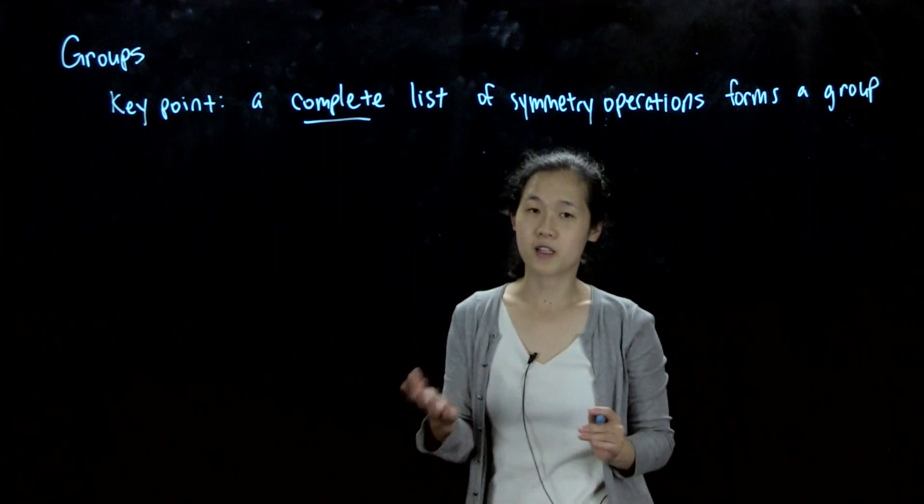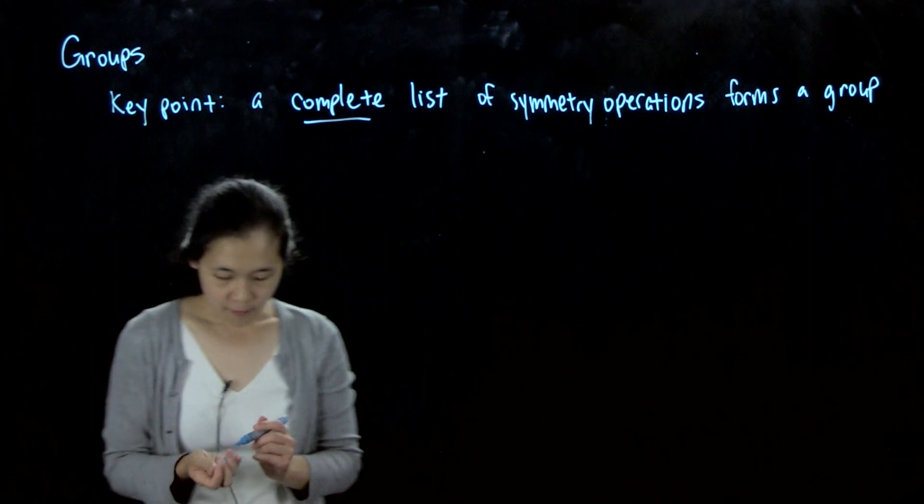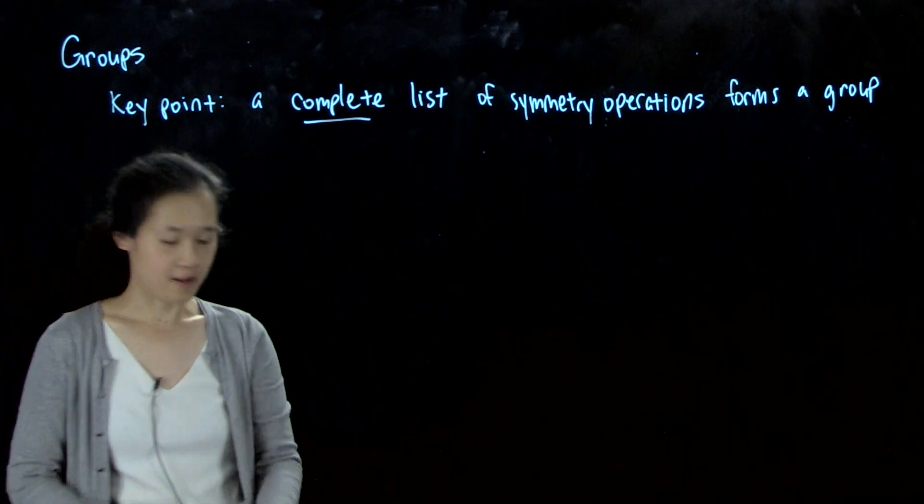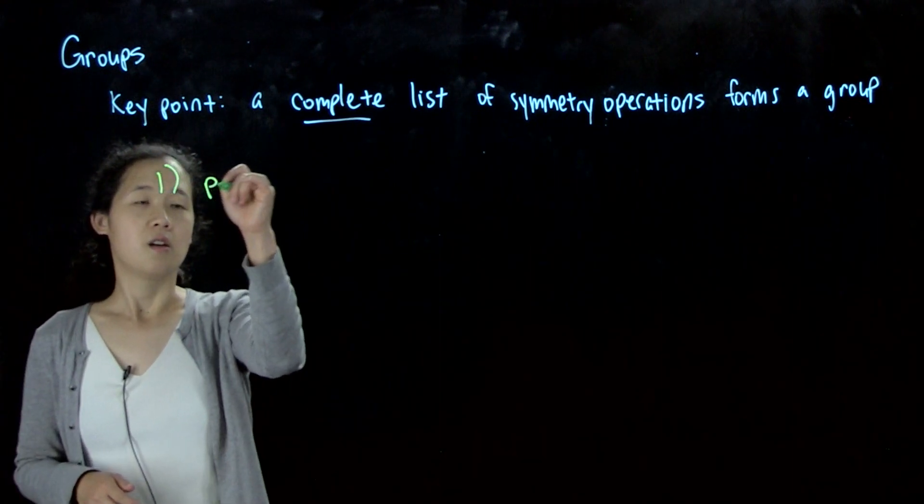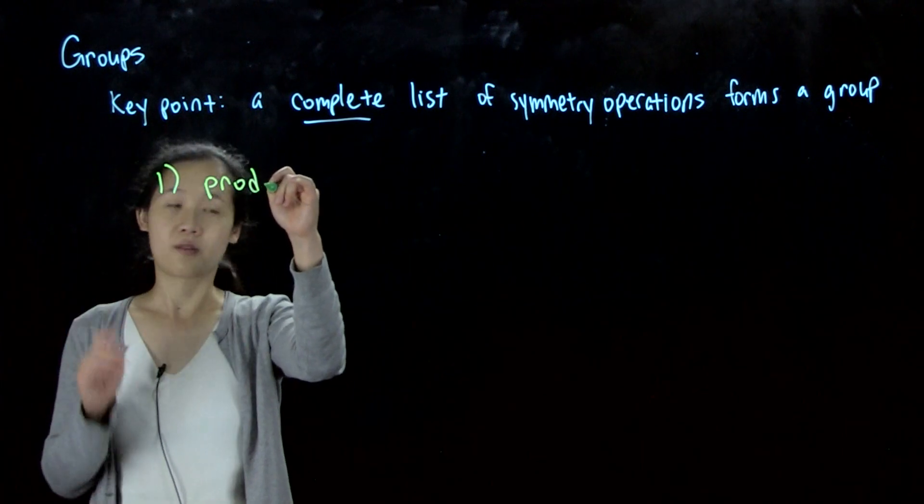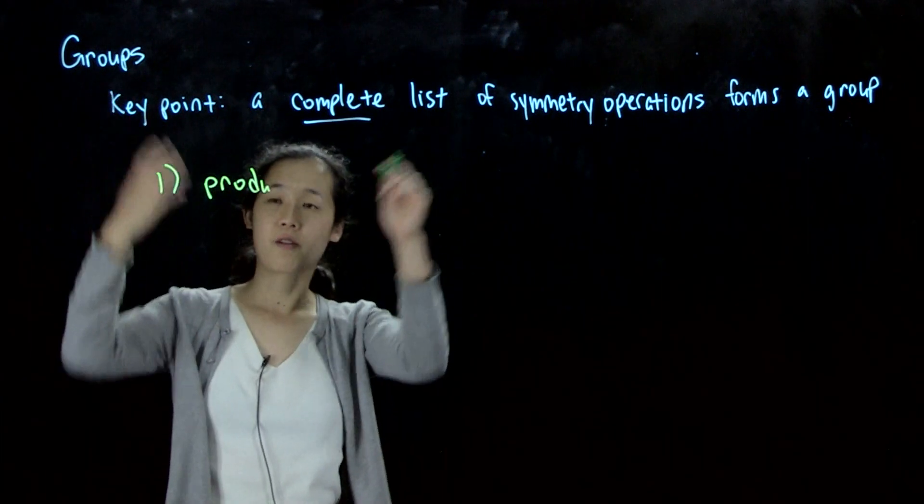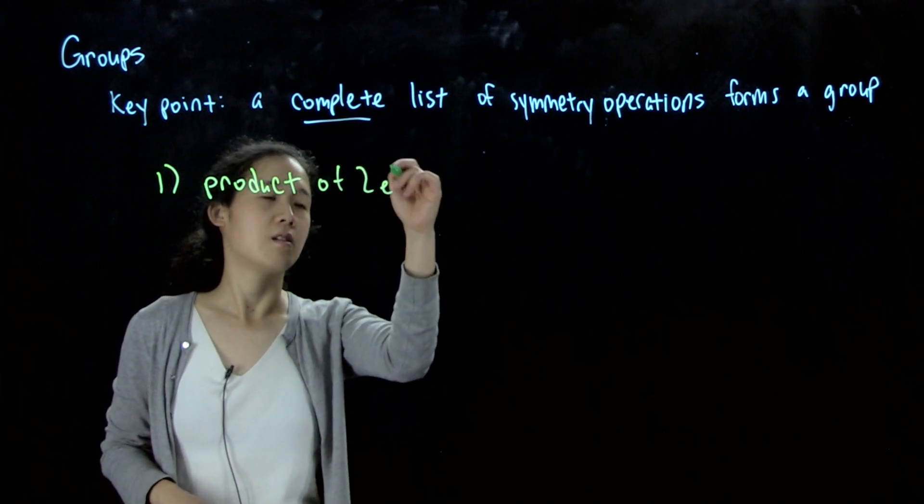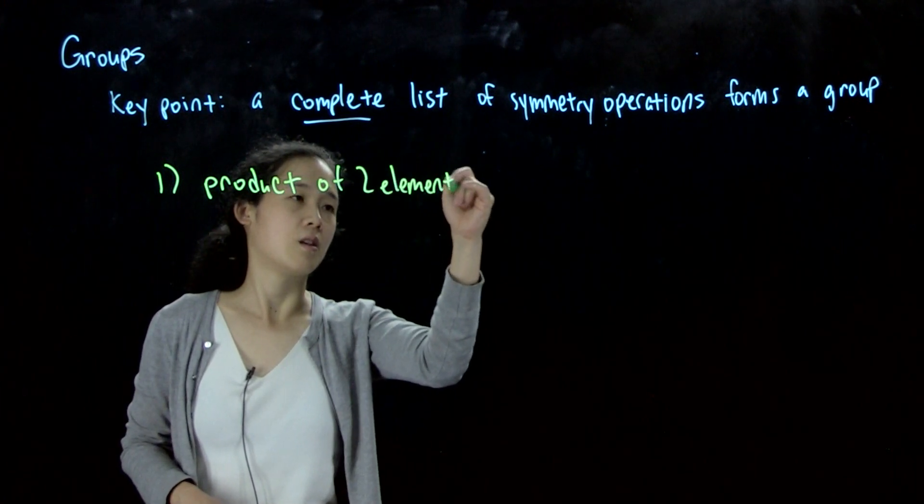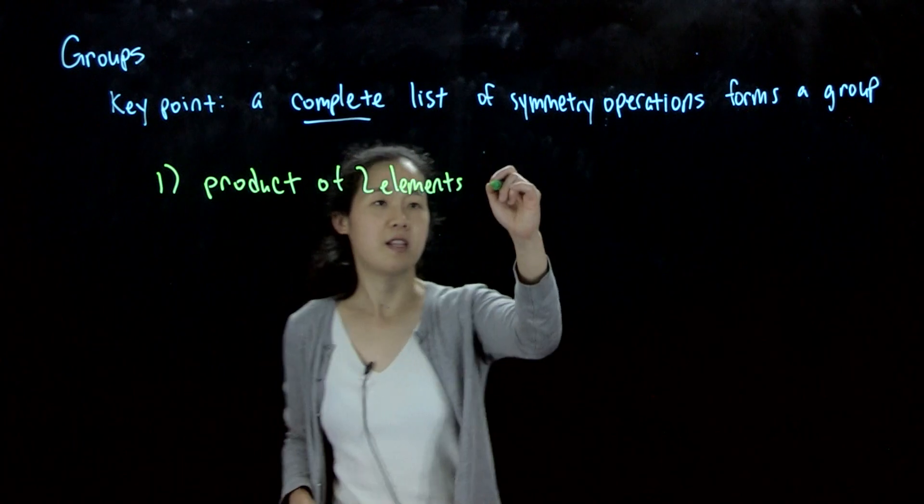Okay, but first we'll talk about the definitions of what a mathematical group is. So the first rule, you can follow along, is one: product of any two elements within this group, so aka two symmetry operations, product of two elements is also an element in the group.